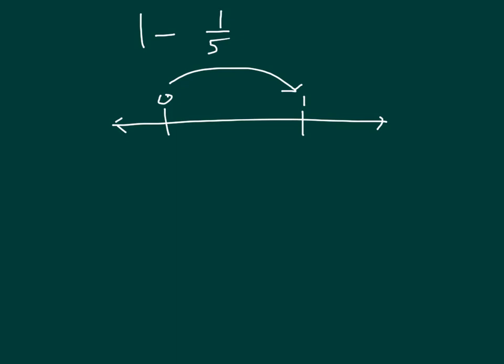Our answer is going to be between what whole numbers? Well, between 0 and 1. We know we have to divide that into 5 parts there. Let's label those parts: 1 fifth, 2 fifths, 3 fifths, 4 fifths, and 5 fifths does equal 1.